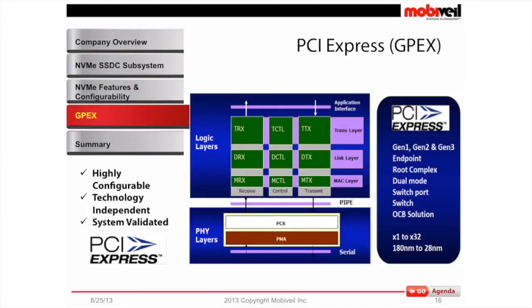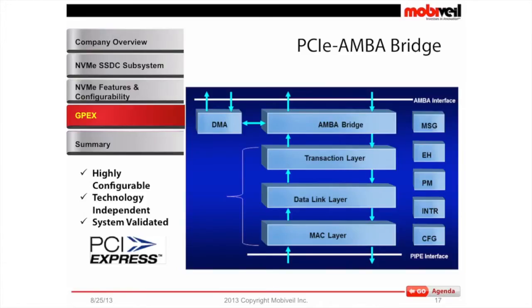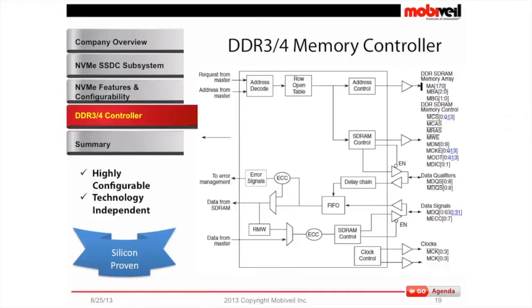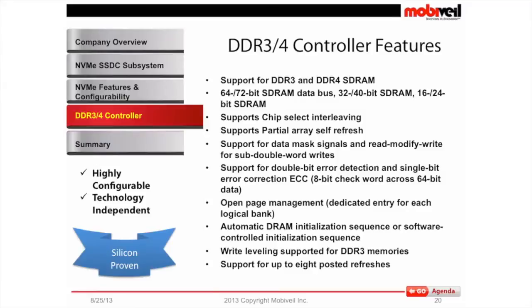We also need a PCI Express controller — this is another IP we offer, compliant with Gen 1, Gen 2, and Gen 3. It has been in the market a long time and is silicon-proven with many products. It provides an AXI interface — consistent with the block diagram where all components use AXI — so you can build your SoC quickly. We also have a DDR3/DDR4 controller with ECC and an AXI interface so it plugs seamlessly into the SoC to create a full NVMe solution. Most importantly, it is silicon-proven.